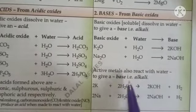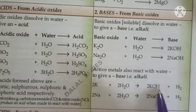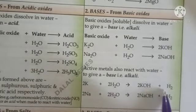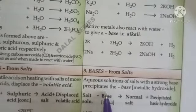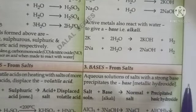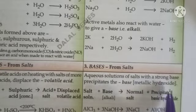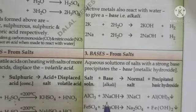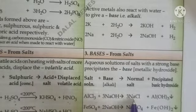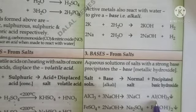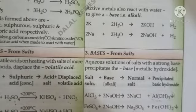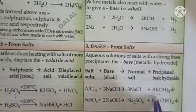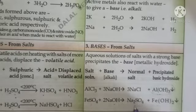When active metals react with water, they also give bases or alkalis. For example, potassium reacting with water gives potassium hydroxide and hydrogen gas; sodium reacting with water gives sodium hydroxide and hydrogen gas. Third, some bases are also formed from salts. An aqueous solution of a salt reacted with a strong base precipitates a metallic hydroxide. For example, aluminium chloride reacted with sodium hydroxide gives NaCl and a precipitate of aluminium hydroxide. Similarly, a zinc sulfate solution reacted with sodium hydroxide gives zinc hydroxide precipitate and sodium sulfate.